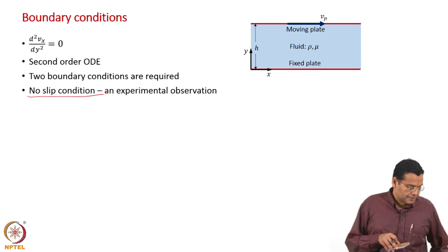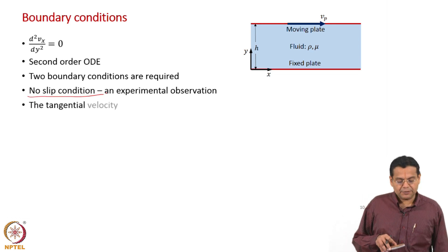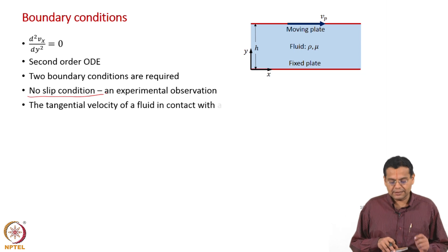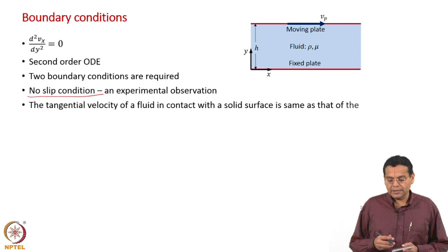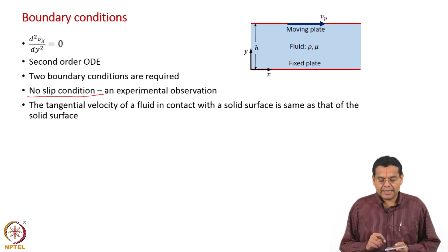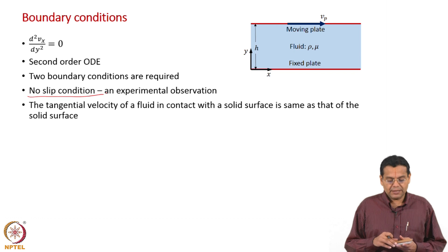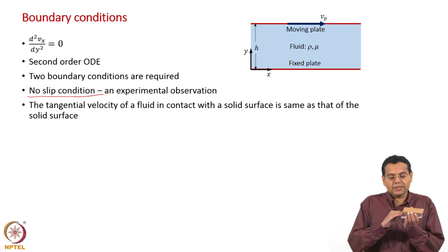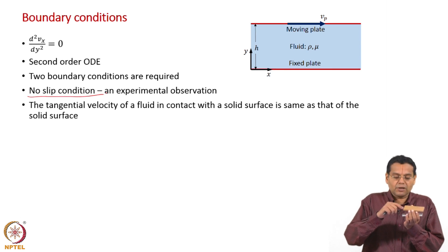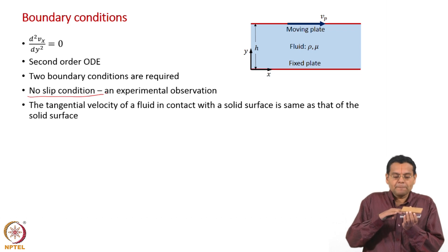What is the formal way of expressing a no-slip condition? The tangential velocity of a fluid in contact with a solid surface is the same as that of the solid surface. That is what we have been saying — that the fluid clings — which means that whenever a fluid is in contact with the solid, the tangential velocity of the fluid is the same as that of the solid. We are discussing about the tangential velocity here; there can also be a normal velocity component.